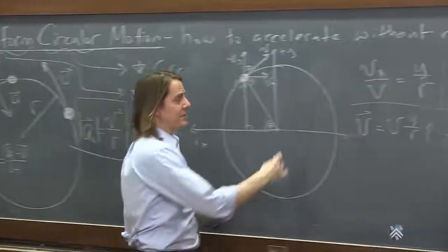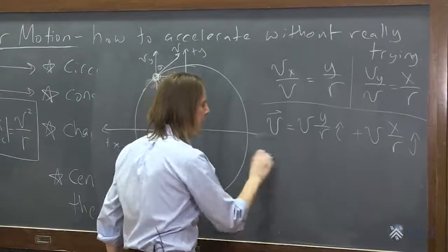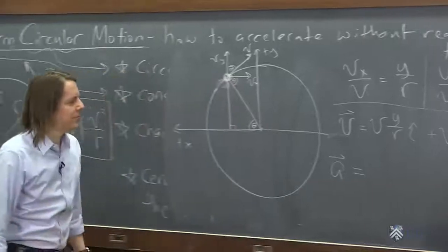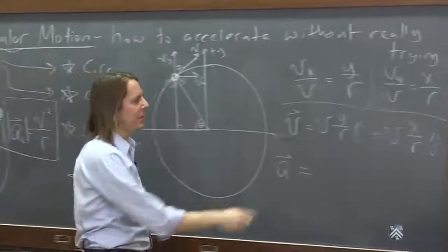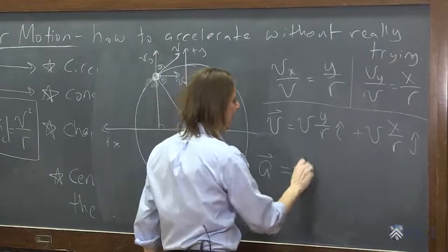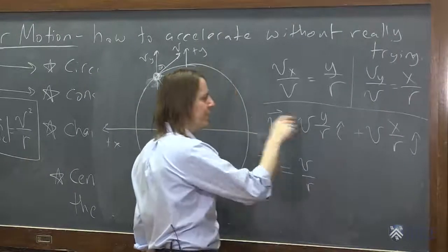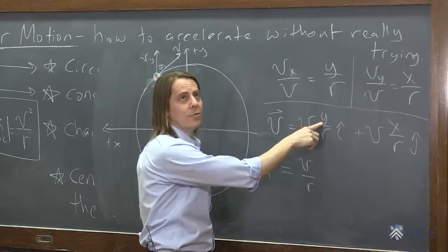Okay, so what is acceleration? Acceleration is the time derivative of this. So let's take the time derivative. The v is constant. Constant uniform motion, constant speed. V is constant. R is constant. V over r. Pull those out. Take the derivative of y. What's the derivative of the y position?